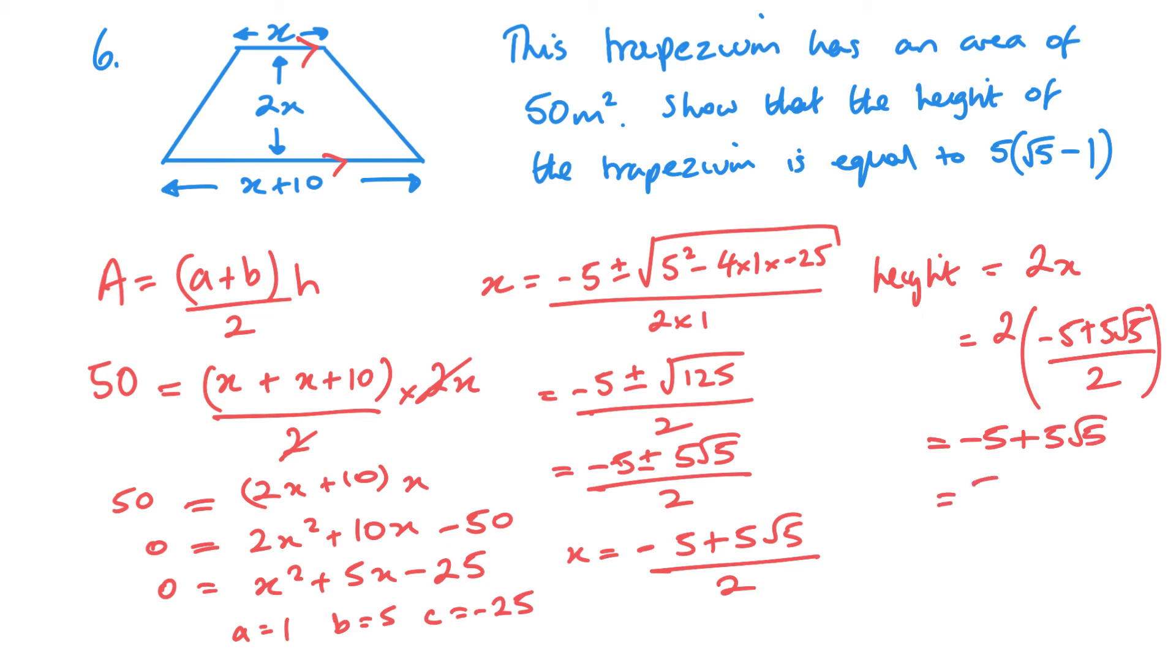And then, if I factorize out 5, you can see I would have, in this case, first of all, I'll write it that way around in the same order. And then, getting it the same as the question, it's just that root 5 minus 1. And that is, then, what we were trying to show.